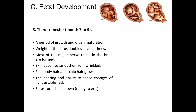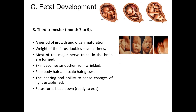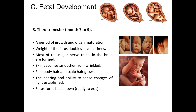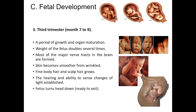The third trimester is a period of growth and organ maturation. Due to that, the fetus weight doubles several times. Most of the major nerve tracts in the brain are formed. The baby's skin becomes smoother, and fine body hair and scalp hair grow. The baby can already see light and can hear. After week 37, the baby is considered full term and ready to function on their own. The baby's head turns down and may engage into the pelvic area in preparation to be born.